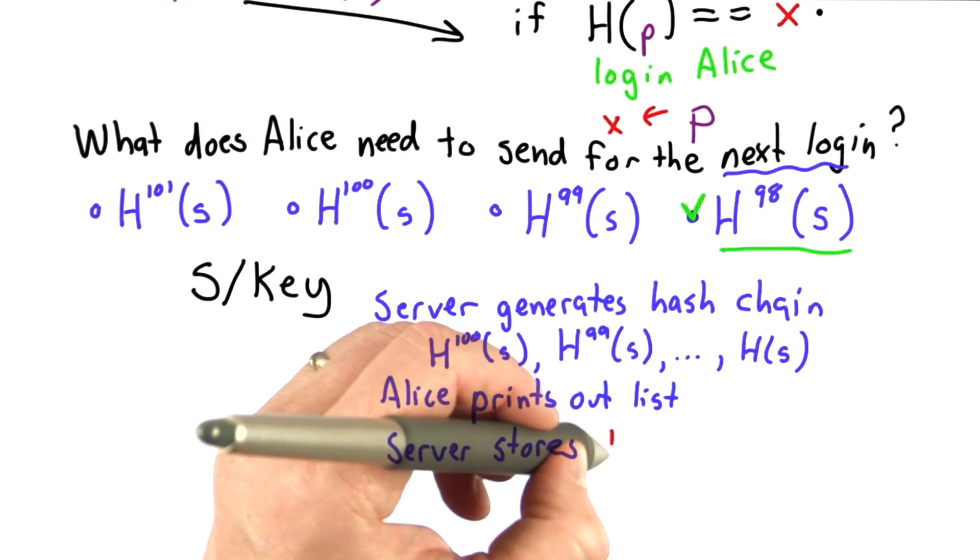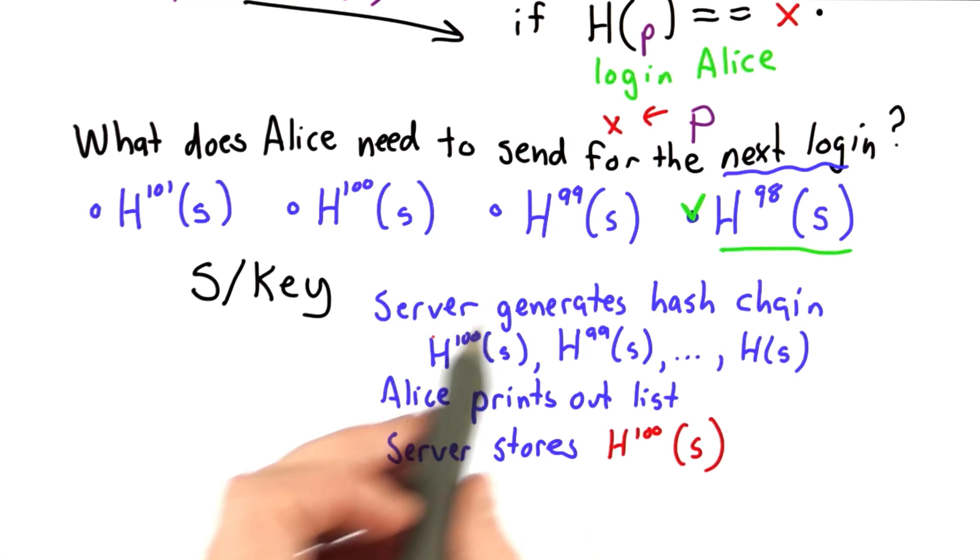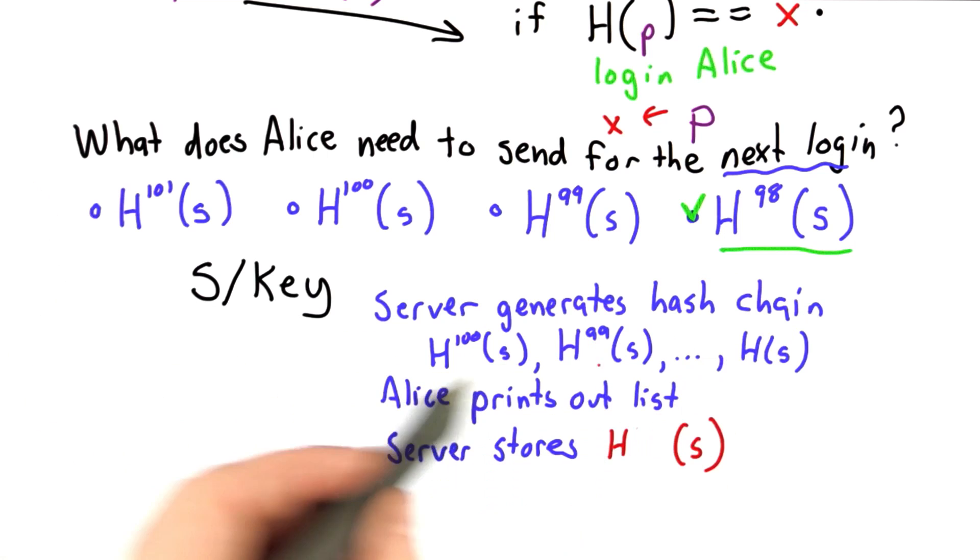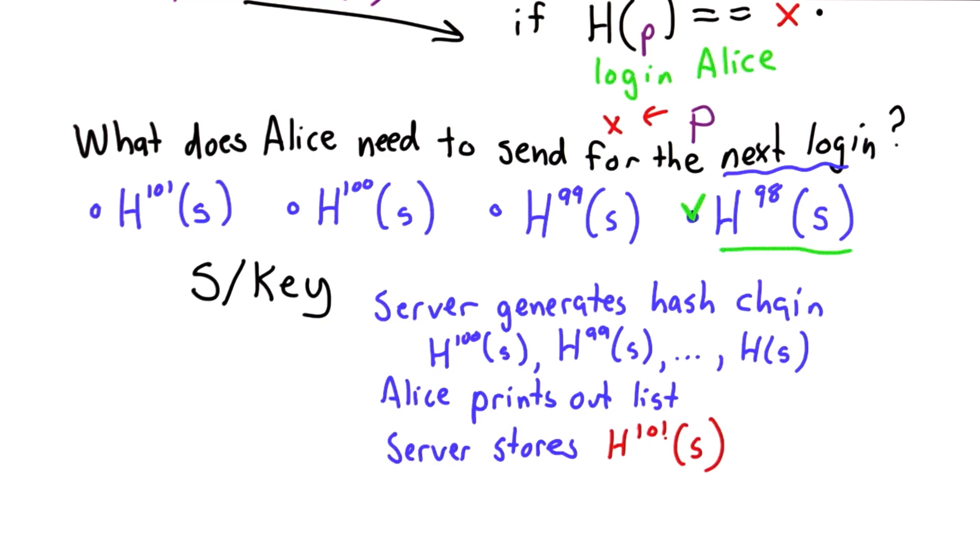The server would store the last entry in that hash chain and nothing else. And so what's stored in the server could not be used to log in. The list that Alice has could be used. And I should correct this: if Alice starts with H100 as the first thing in her list, what the server should actually store would be H101.